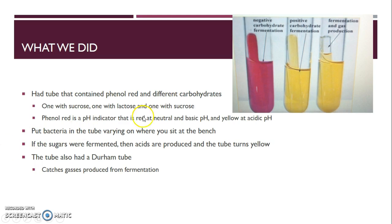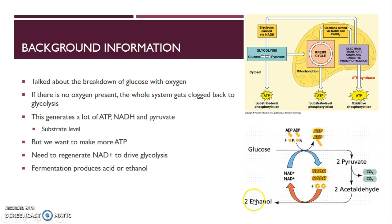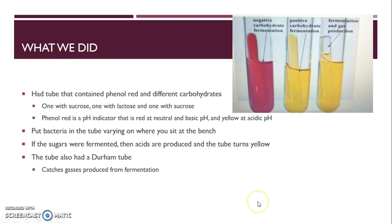We put bacteria into these tubes containing the sugars and pH indicator. Depending on which bacteria you use and whether the sugars were fermented, acids are produced. The acids lower the pH and turn the tube yellow.